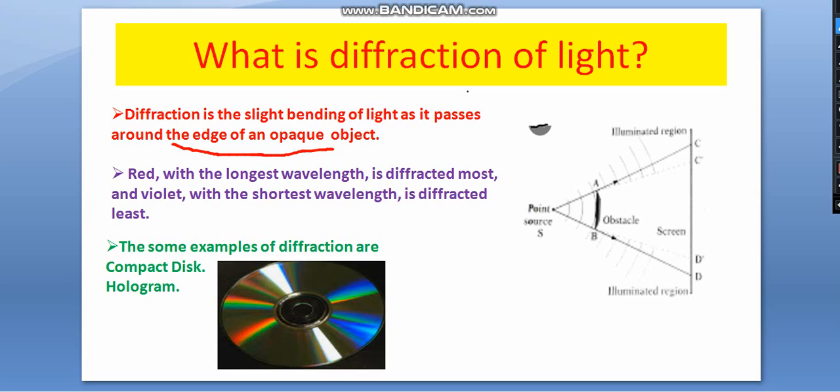Here the question in MCQ can be asked: diffraction is the slight bending of light as it passes around the edge of a transparent, translucent, or opaque or non-opaque. The answer should be opaque. Actually diffraction is vast topic but it is just for 10th level. So at 10th level you have to consider only for opaque object.